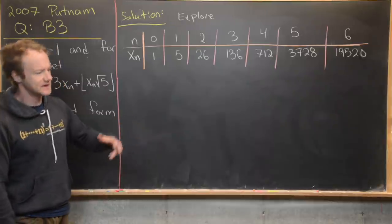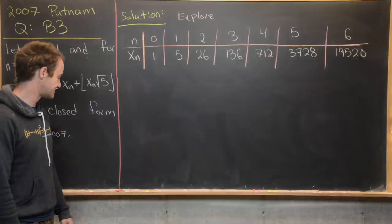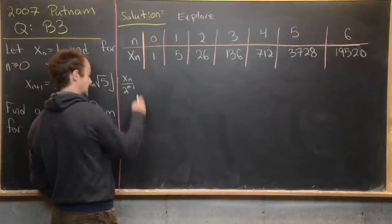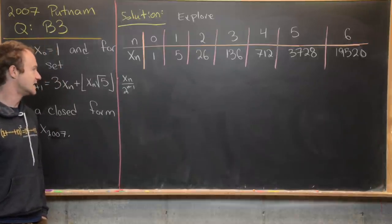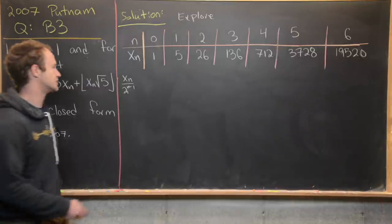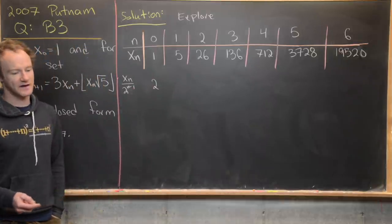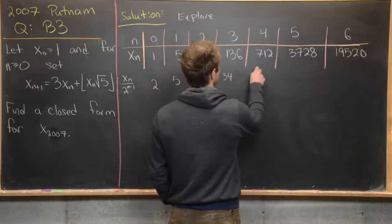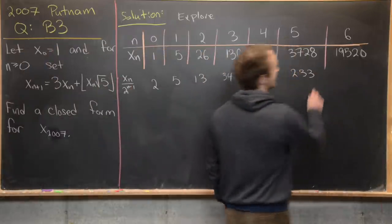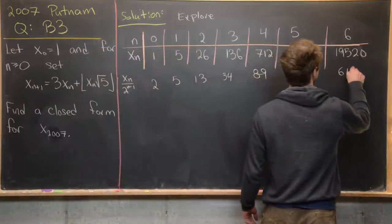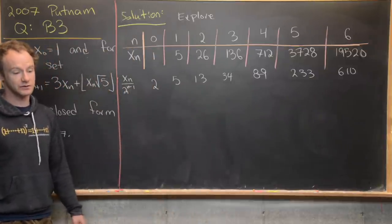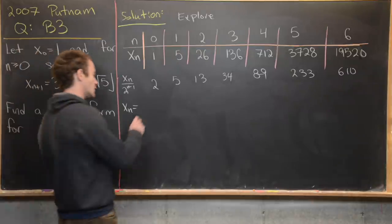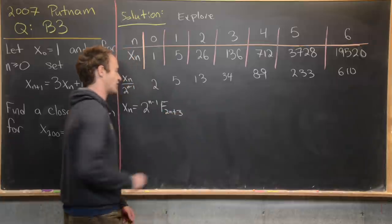As I said in my hints, this is probably related to some well-known sequence. Indeed, if you look at xₙ divided by 2^(n−1), you get something more interesting: 2, 5, 13, 34, 89, 233, 610. This could bring us to the following guess for a closed form: xₙ equals 2^(n−1) times the (2n+3)rd Fibonacci number — so again, expressed in terms of a well-known sequence.